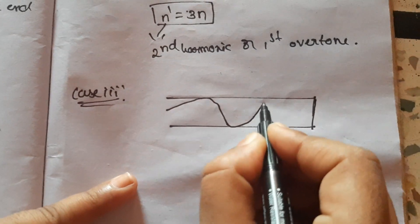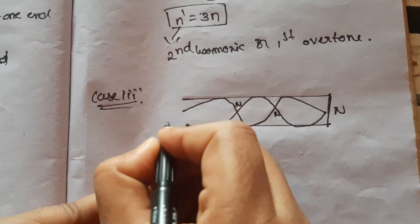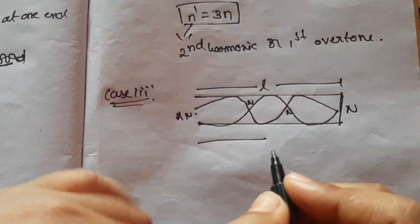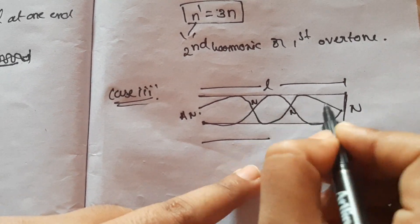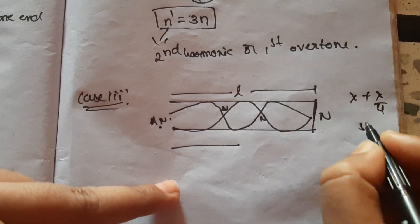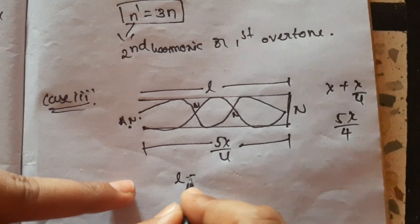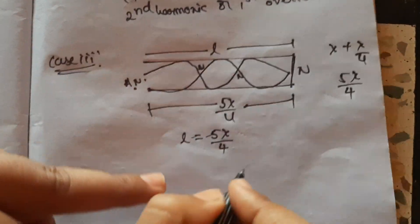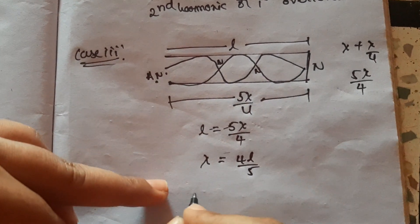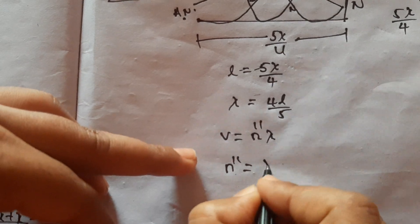There are three loops formed. We have a node, a node, and an anti-node. Where L is the length of the organ pipe — the distance between node and anti-node is lambda by 4, so the total is 5 lambda by 4. Therefore L is equal to 5 lambda by 4, giving lambda equal to 4L by 5. Speed of wave V is equal to N double dash times lambda, so N double dash is equal to V by lambda, which is 5V by 4L.